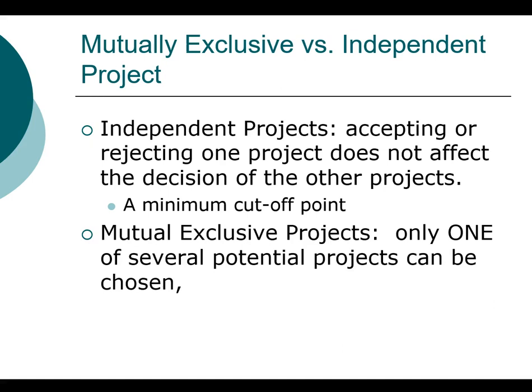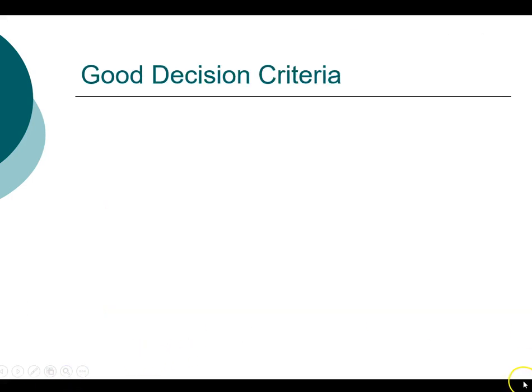Mutually exclusive projects means that only one of the options can be chosen. An example often used for mutually exclusive projects is a bookkeeping system. Companies require bookkeeping software to manage financial records, but they don't want two sets of books. If you decided on one accounting system — for example, you decided to go with SAP — then you would not choose an alternative system. When working with mutually exclusive projects, we have to find a way to rank them.